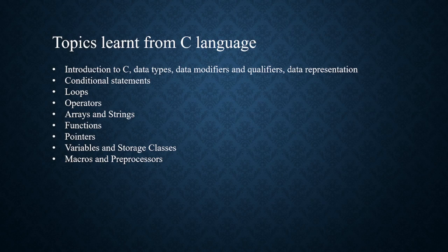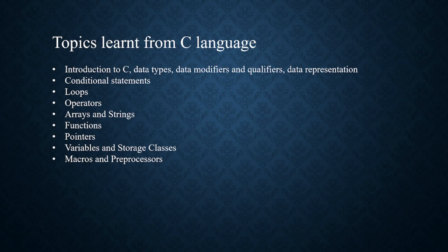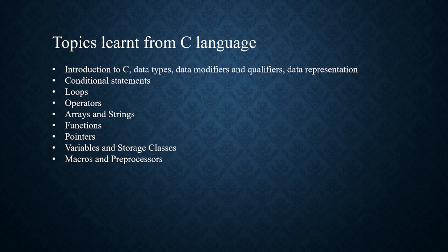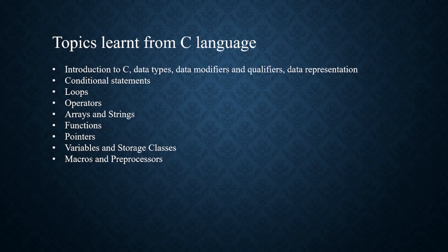Preprocessors and storage classes were also covered. This is based on Windows, but they also mentioned Linux. There are user and kernel space applications. Storage classes include auto, static, local, etc. Memory segments include text segment, stack segment, data segment, heap segment, etc. Preprocessors include header files, which are common in C for processing any code — declarations with hash includes like stdio.h, math.h, based on the application.